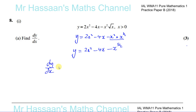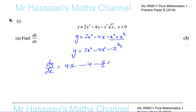So dy/dx equals: for 2x squared, multiply by the power — 2 times 2 is 4 — then take 1 from the power, giving 4x. For minus 4x, differentiating gives minus 4, since 1 times 4 is 4 and x to the power of 0 is 1. Then you have minus 5 over 2 times x, and taking 1 from the power gives 5 over 2 minus 1, which is 3 over 2.